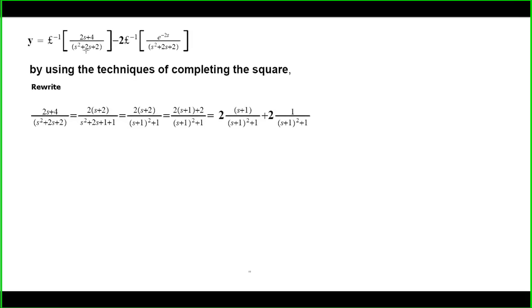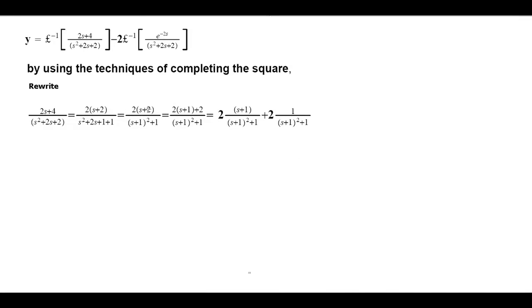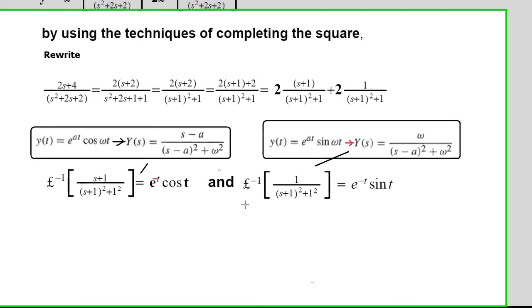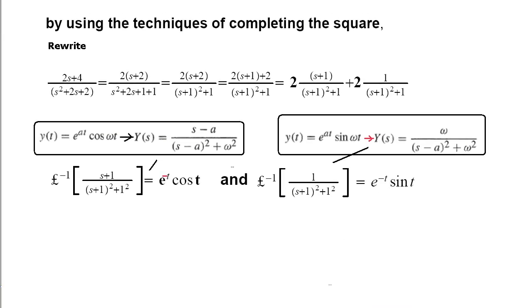Now we come back to this equation. In order to match all these values to calculate the inverse Laplace transform, we shall use the technique of completing the square to rewrite this expression in this form. If we match it with the table values, I have s-a here, here I have s+1 instead, and here I have a square of s+1. So the inverse Laplace transform of this expression is e^(-t)cos(t). The same reasoning provides us this value.